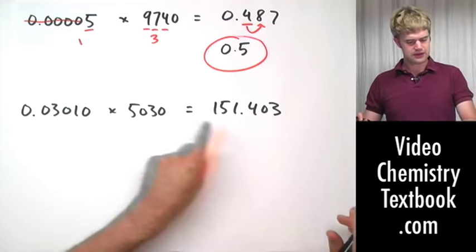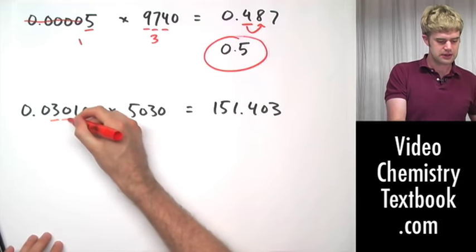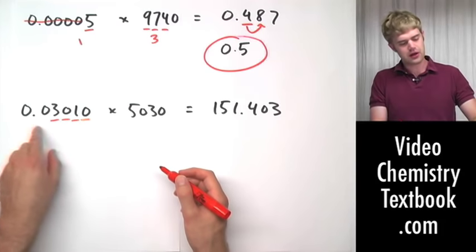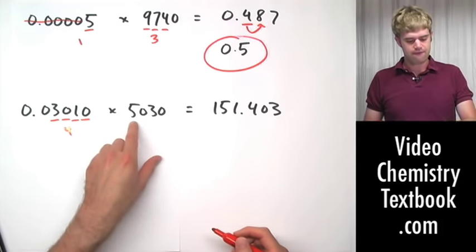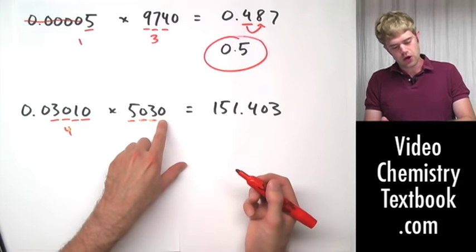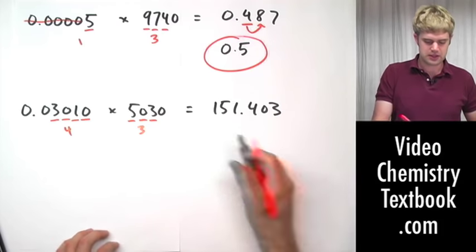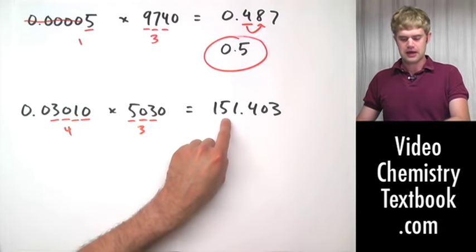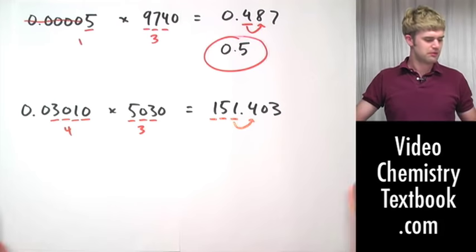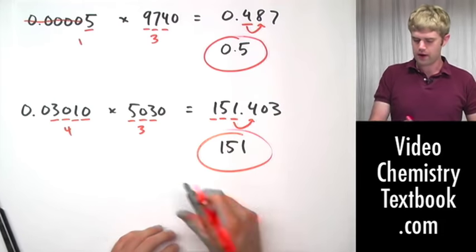And finally, these multiplied together. 0.0 — we don't worry about those. Three, zero, one — the zero is sandwiched in between so it's significant. And the zero to the right is also significant because there's a decimal place. Four significant figures here. Five, zero, three — we know those are significant because of the sandwich. The zero to the right is not significant because there is no decimal place in that number, which means we're rounding our answer to only three significant figures. The one stays, the five stays, and the one stays — look next door. It's a four, so we keep it the same. Our final answer is one, five, one.